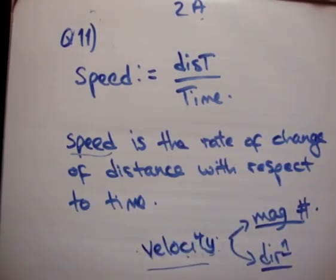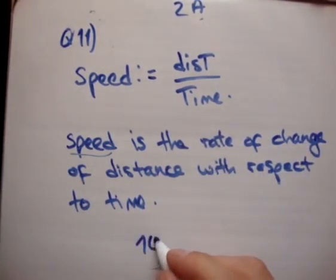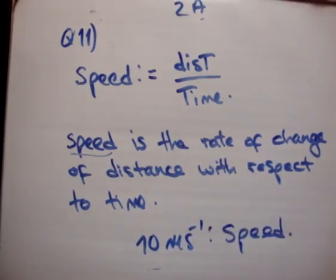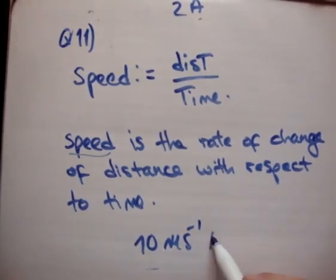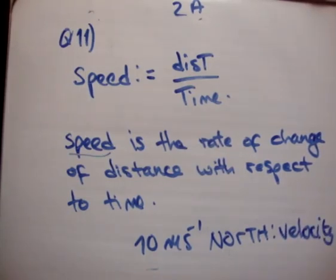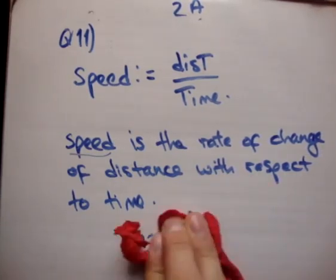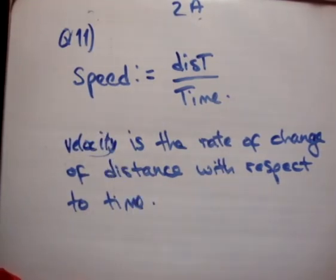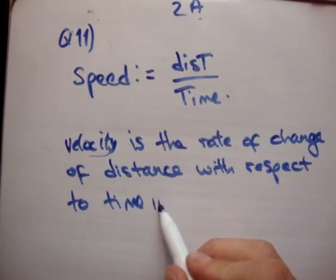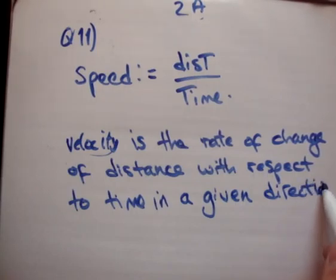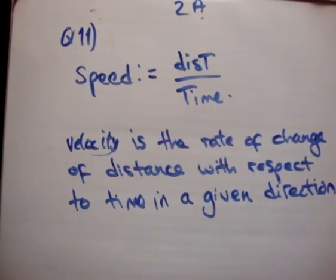So, let's just give a quick example of that. A quick example would be 10 meters per second. That's a speed because it only has a magnitude or a number. However, if we said 10 meters per second north, that's a velocity. Okay? So, how do we alter our definition of speed in order to encompass velocity? I would say this. Velocity is the rate of change of distance with respect to time in a given direction. And that encompasses the fact that it has both magnitude and direction. So, that's the first part there.